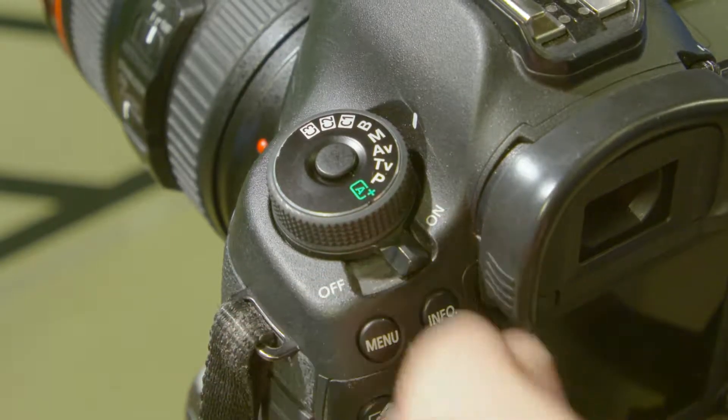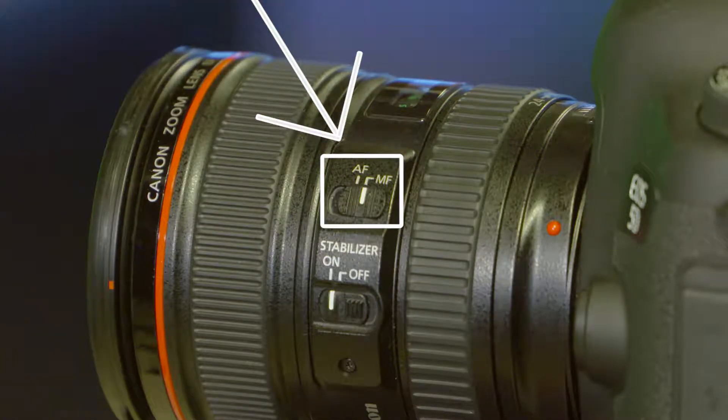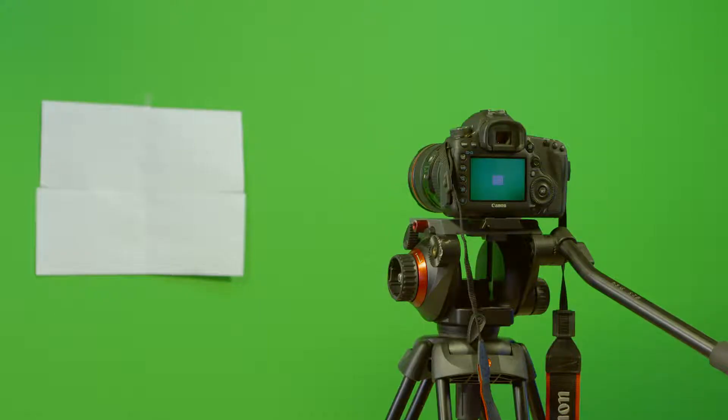Next, turn on the camera on the top left side. Now you want to make sure the focus is set to manual, which you can locate on the left side of the lens.